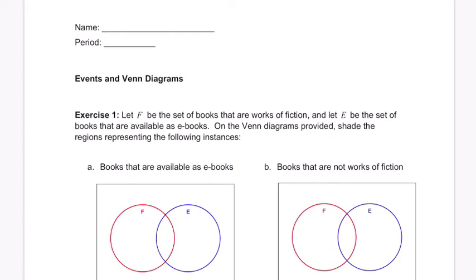Okay, so we've got some definitions here to deal with. We've got F, be the set of books that are fiction, and E, be the set of books that are available as e-books. And we have some diagrams that they want us to color in.